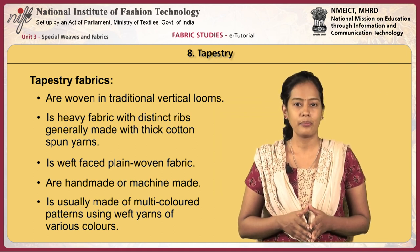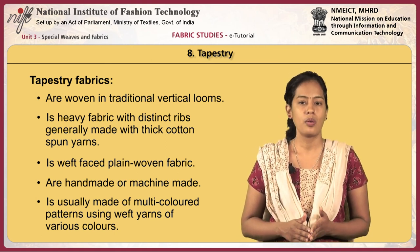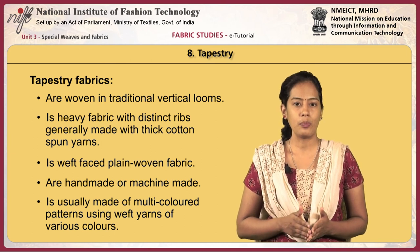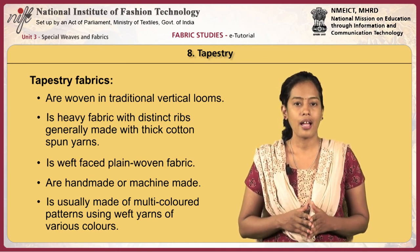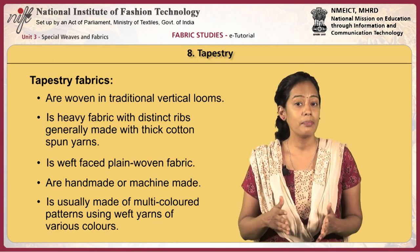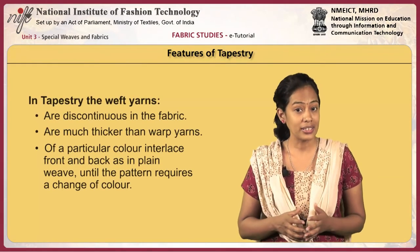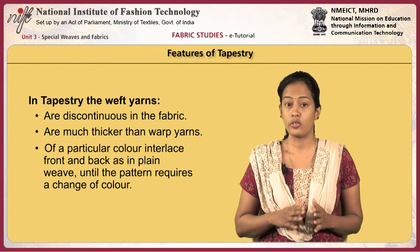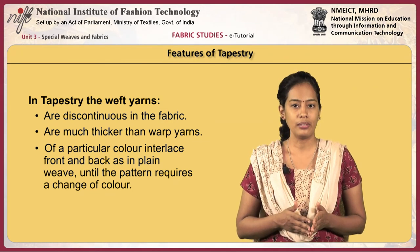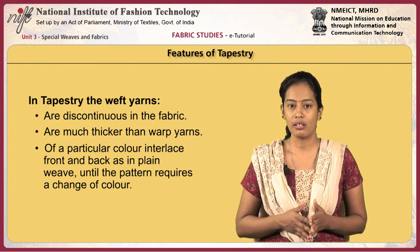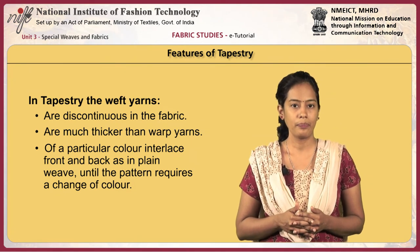Tapestry fabrics have rich heritage and are woven in traditional vertical looms. It is a heavy fabric with distinct ribs, generally made with thick cotton spun yarns. It is a bare face plain woven fabric. They are handmade or machine made. They are usually made of multicolored patterns using weft yarns of various colors. The weft yarns are discontinuous in the fabric as they do not run along the entire fabric width.